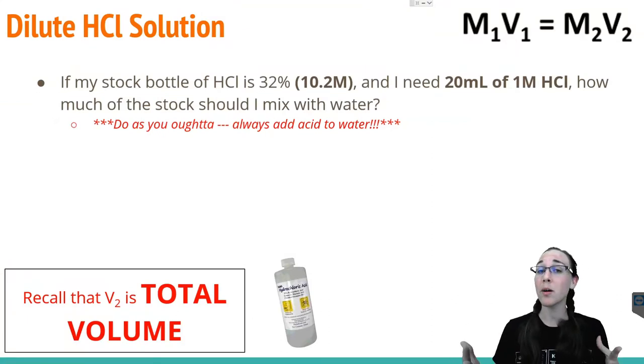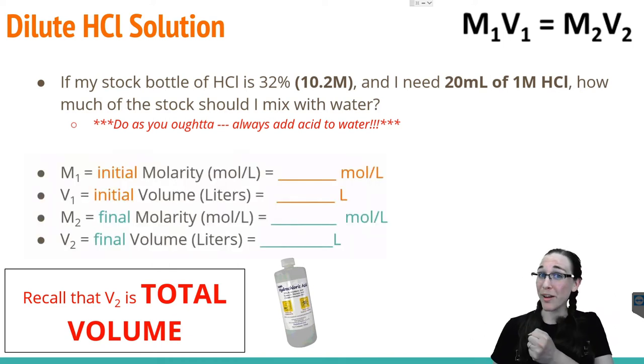If I had a stock bottle of hydrochloric acid that was 32% purity, i.e. it's about 10.2 molar or moles per liter, and I actually need 20 milliliters of one molar hydrochloric acid, how much of the stock should I take out and mix with water? This is where our M1V1 equals M2V2 equation comes into play.